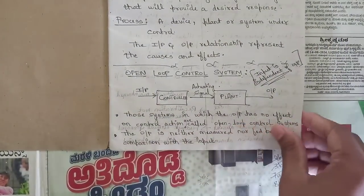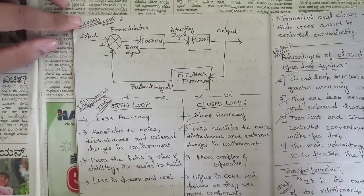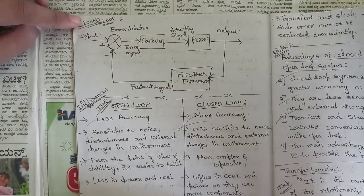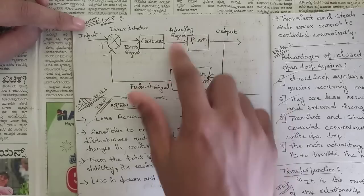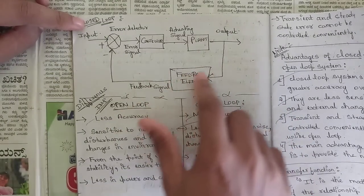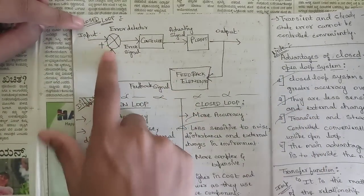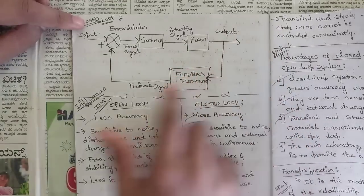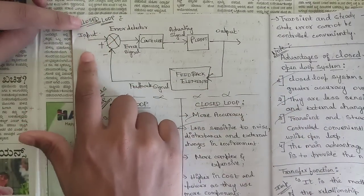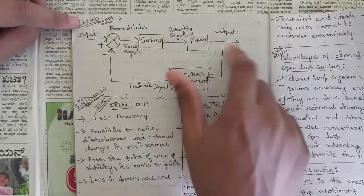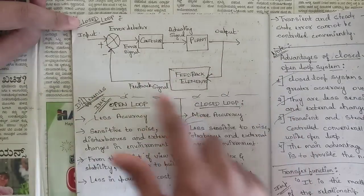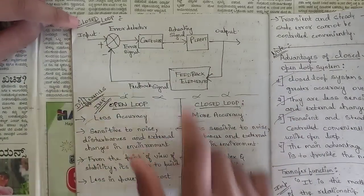In a closed loop control system, input is dependent on the output. Whatever input is given goes through a controller and plant, and one feedback element connects the output back to the input. So the output is completely dependent on the input, and whatever output is generated is fed back to the input by the feedback element. This is called a closed loop system.